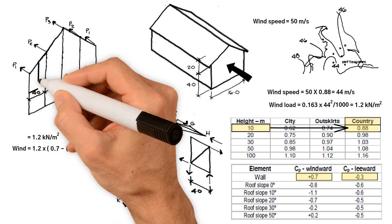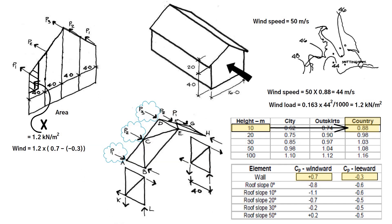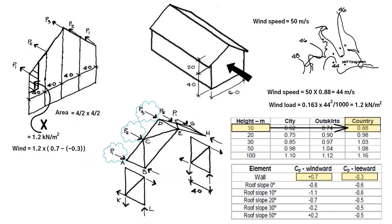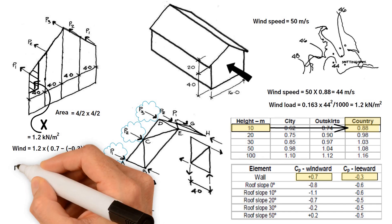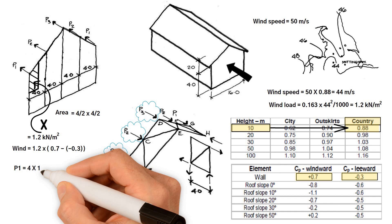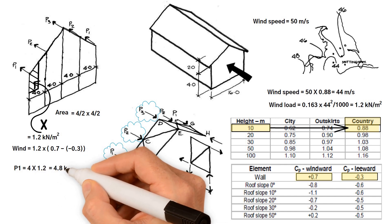P1 force is obtained from area multiplied by the wind pressure. However, what is the area for the load here? The area for the load P1 approximately equals half the distance between the gable columns divided by half of the height of column, which equals 4 over 2 times 4 over 2, we get 4 meters squared. Therefore, P1 equals area 4 meters squared times wind pressure 1.2 kilonewtons per meter squared, and we get 4.8 kilonewtons.